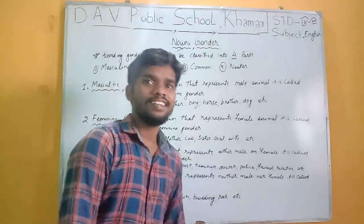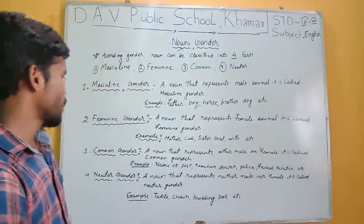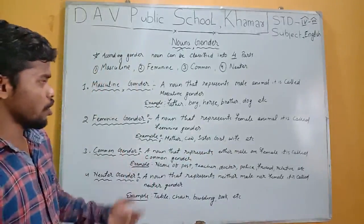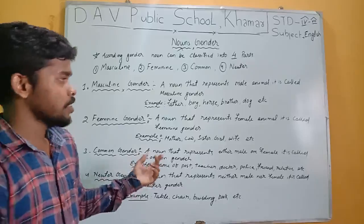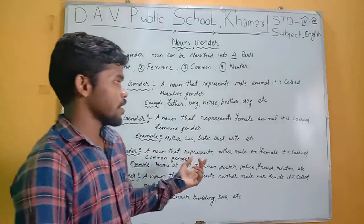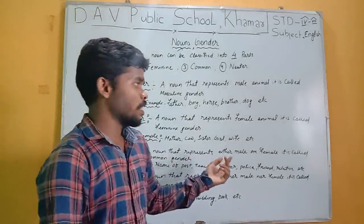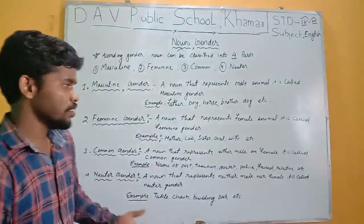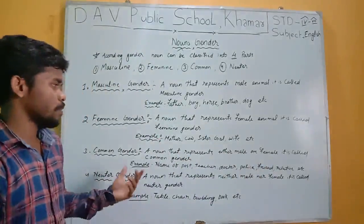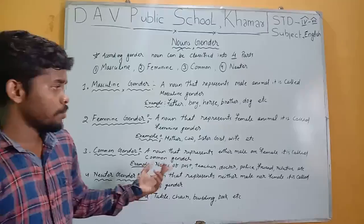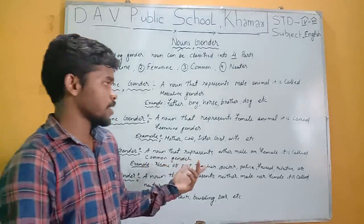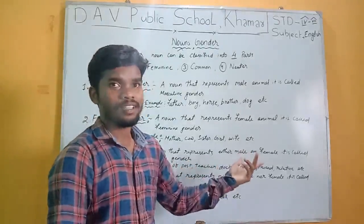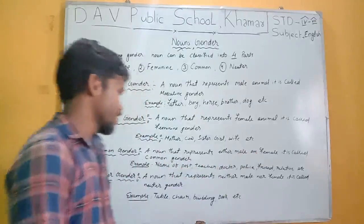Next is common gender. Common gender means a noun that represents either male or female. It is called common gender. For example: teacher, doctor, police, friend, relatives.